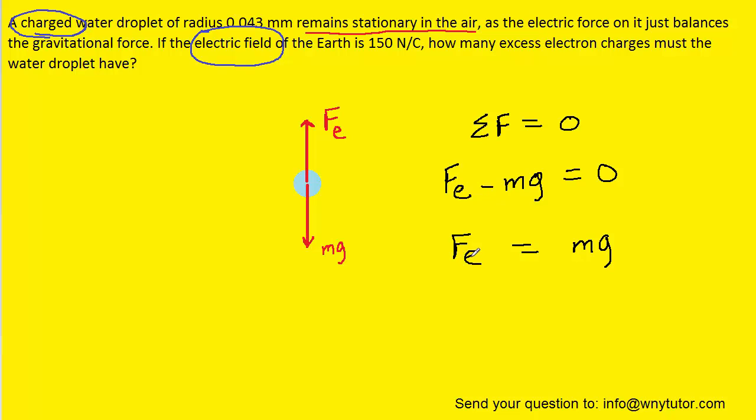Now, we're learning in this chapter that the electrical force, Fe, is equal to the product of the electric field and the charge. So we can actually substitute E multiplied by Q for Fe.